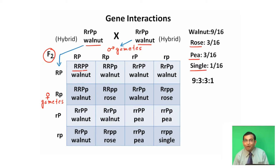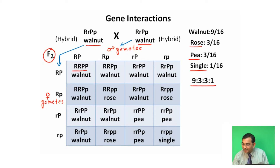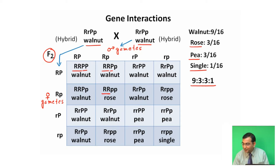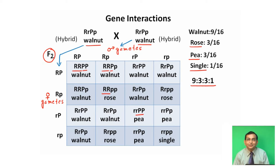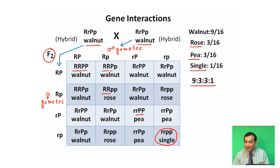There is a total ratio of 9:3:3:1, of which nine walnut have two dominant genes R and P. In rose-shaped comb, only one dominant gene R is present. In pea comb, dominant gene P is present. In single-shaped comb, two recessive genes are present, that is, rrpp.